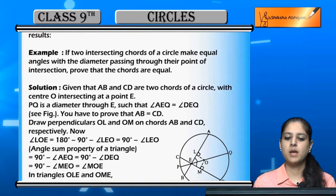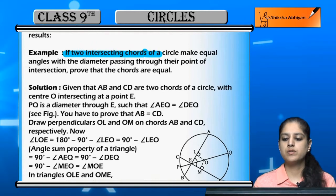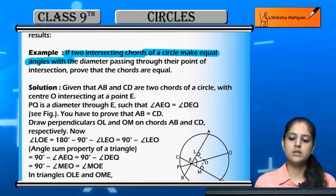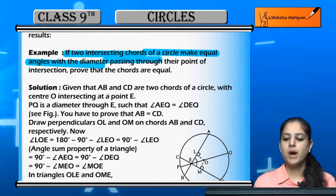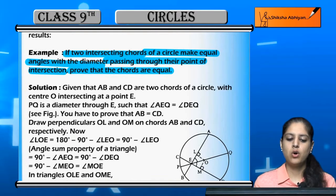Based on this, let's look at an example: if two intersecting chords of a circle make equal angles with the diameter passing through their point of intersection, prove that the chords are equal.